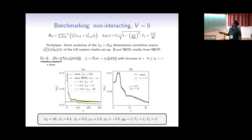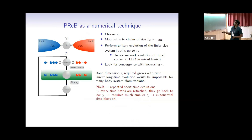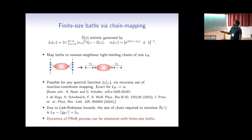The coupling γ does not play a role in determining the optimum bath length L_b, though it may play a role in defining the value of τ — which you have to find by looking for convergence. The first hopping in the chain is proportional to γ, while the rest is independent of γ. So it doesn't really affect the Lieb-Robinson idea.